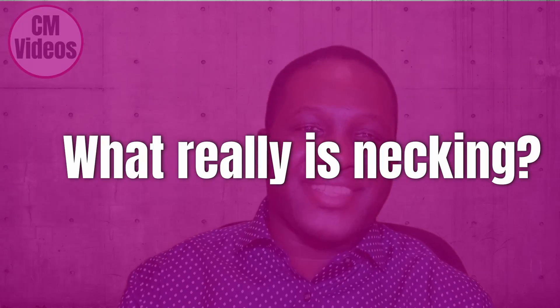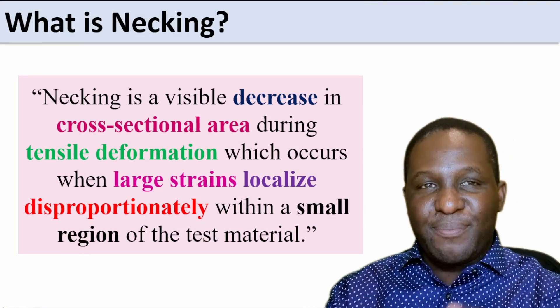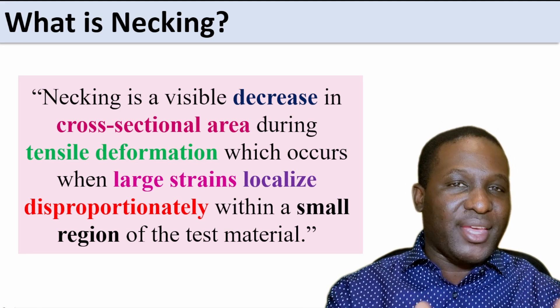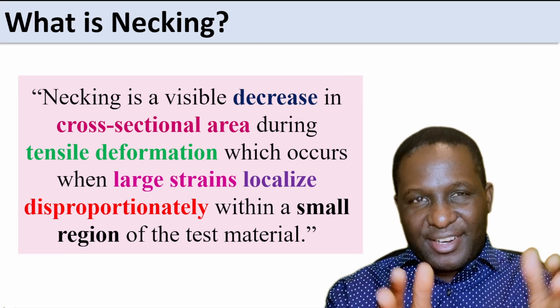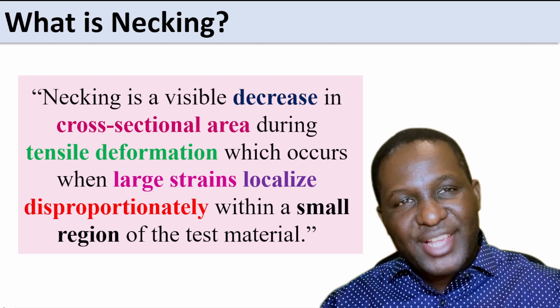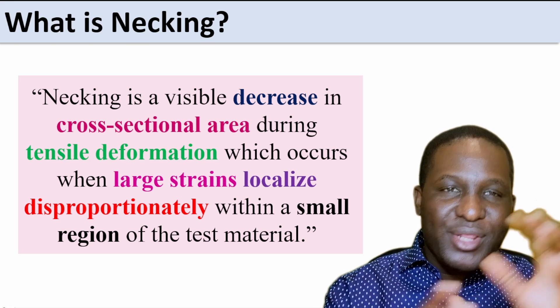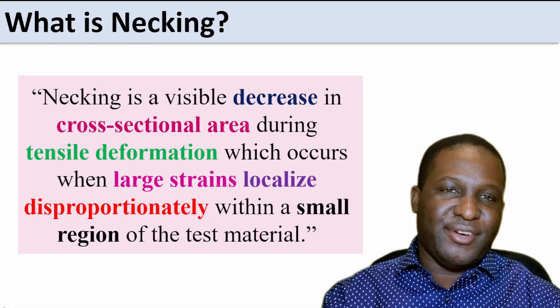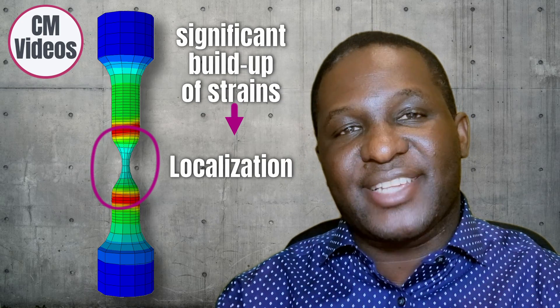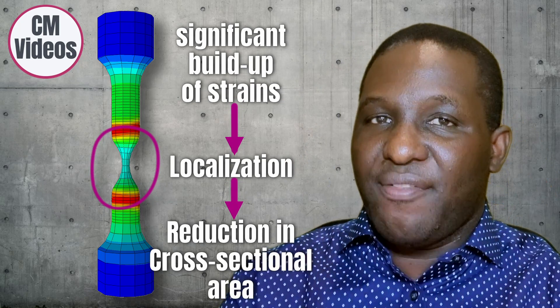The first thing to look at is: what really is necking? What is the definition of necking? Necking is a visible decrease in cross-sectional area during a tensile deformation — it has to be a tensile deformation — and there is a decrease in cross-sectional area. This occurs mainly when large strains begin to localize disproportionately within a small region of the material being tested. If these features are evident — you're doing a tensile test, there is a region with significant buildup of strains, and that strain leads to localization and reduction in cross-sectional area — that is necking.